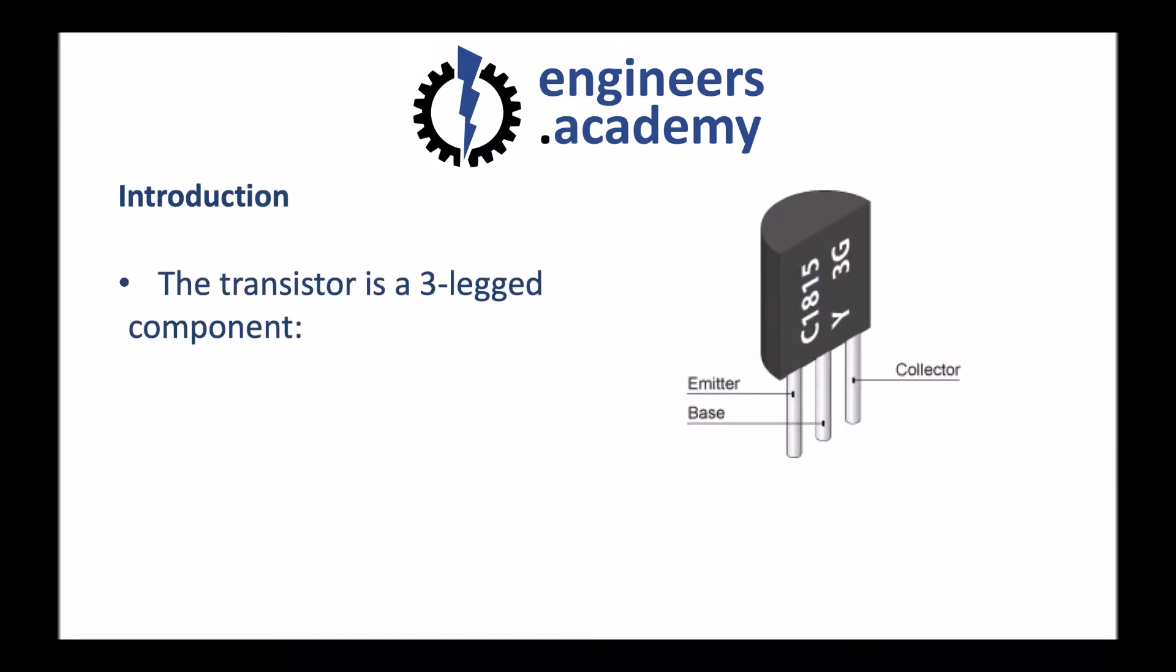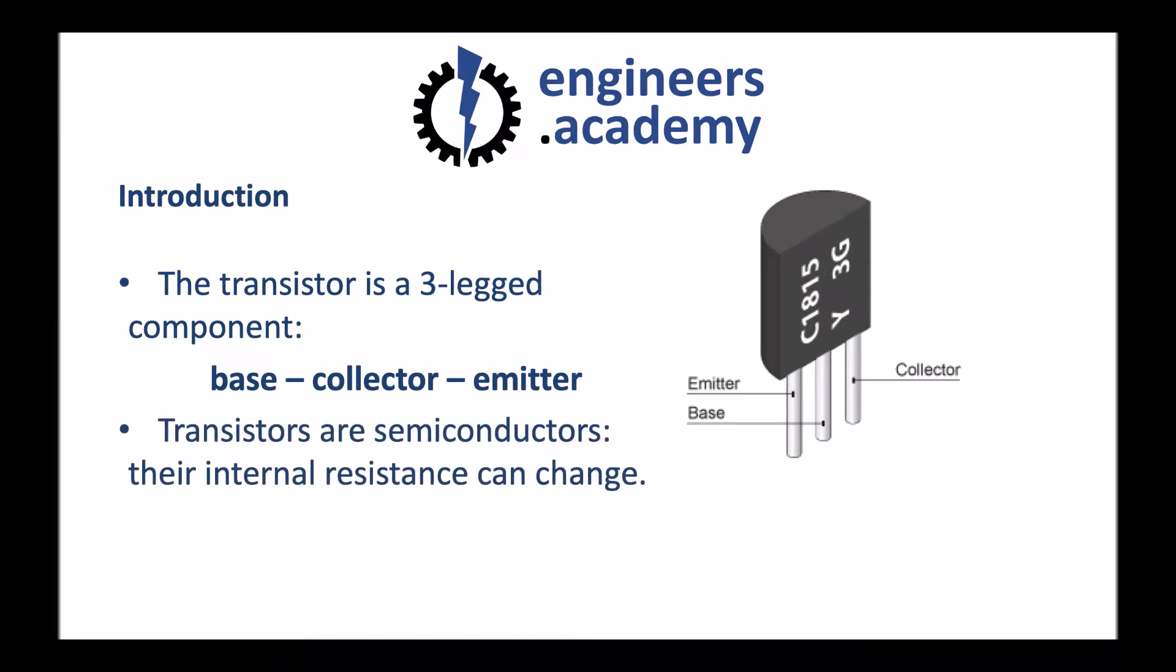The transistor is a three-legged component, and these legs or connections are named the base, the collector, and the emitter. They each have a role to play in the operation of the transistor. Transistors are examples of semiconductors. We spoke in the previous video about semiconductors and how they're constructed in order to form junctions. This means, just like in our previous example of diodes, their internal resistance can change.